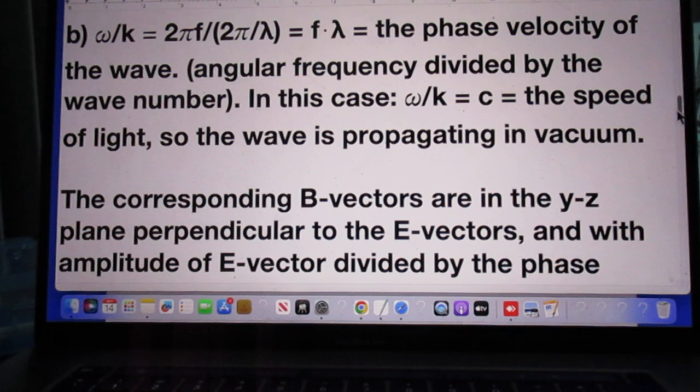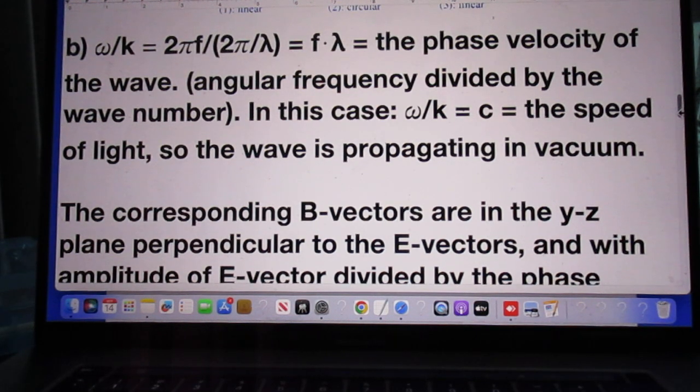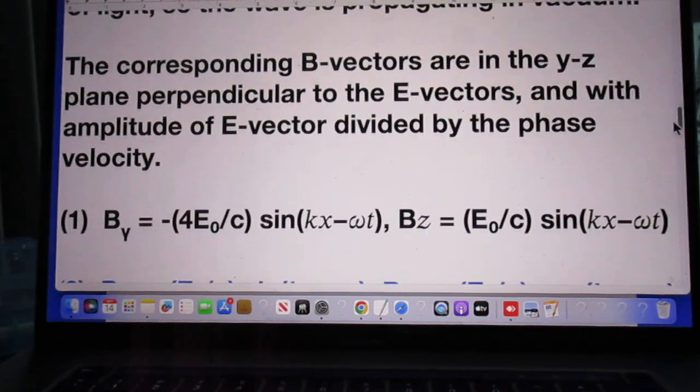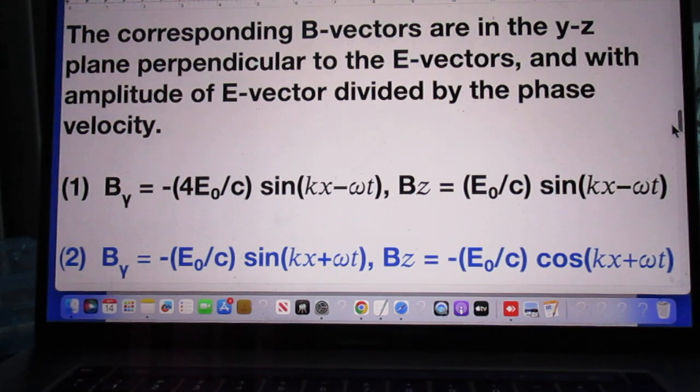B. Omega over k is the phase velocity. And that is f times lambda. Angular frequency divided by the wave number is the phase velocity. In this case, omega divided by k is c, which is the speed of light. So the wave is propagating in vacuum.